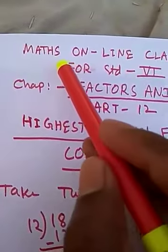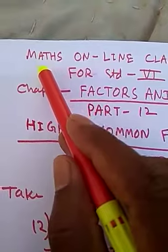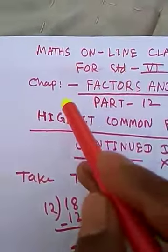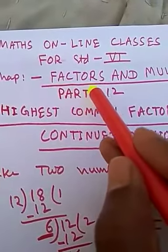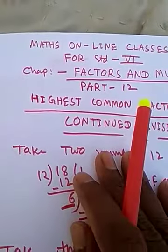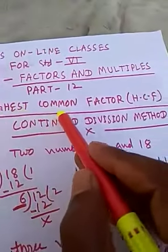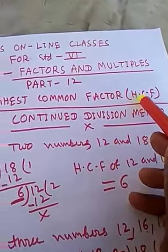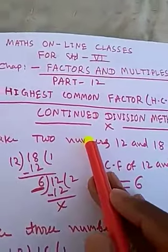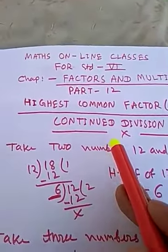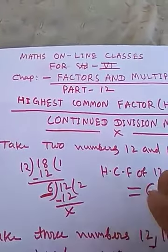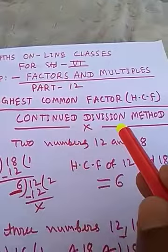Hello, good morning everyone. This is a maths online class for Standard 6. The chapter name is Factors and Multiples, Part 12. Here we shall learn about Highest Common Factor, meaning HCF, by the continued division method — how to find the HCF of two or more numbers using this method.